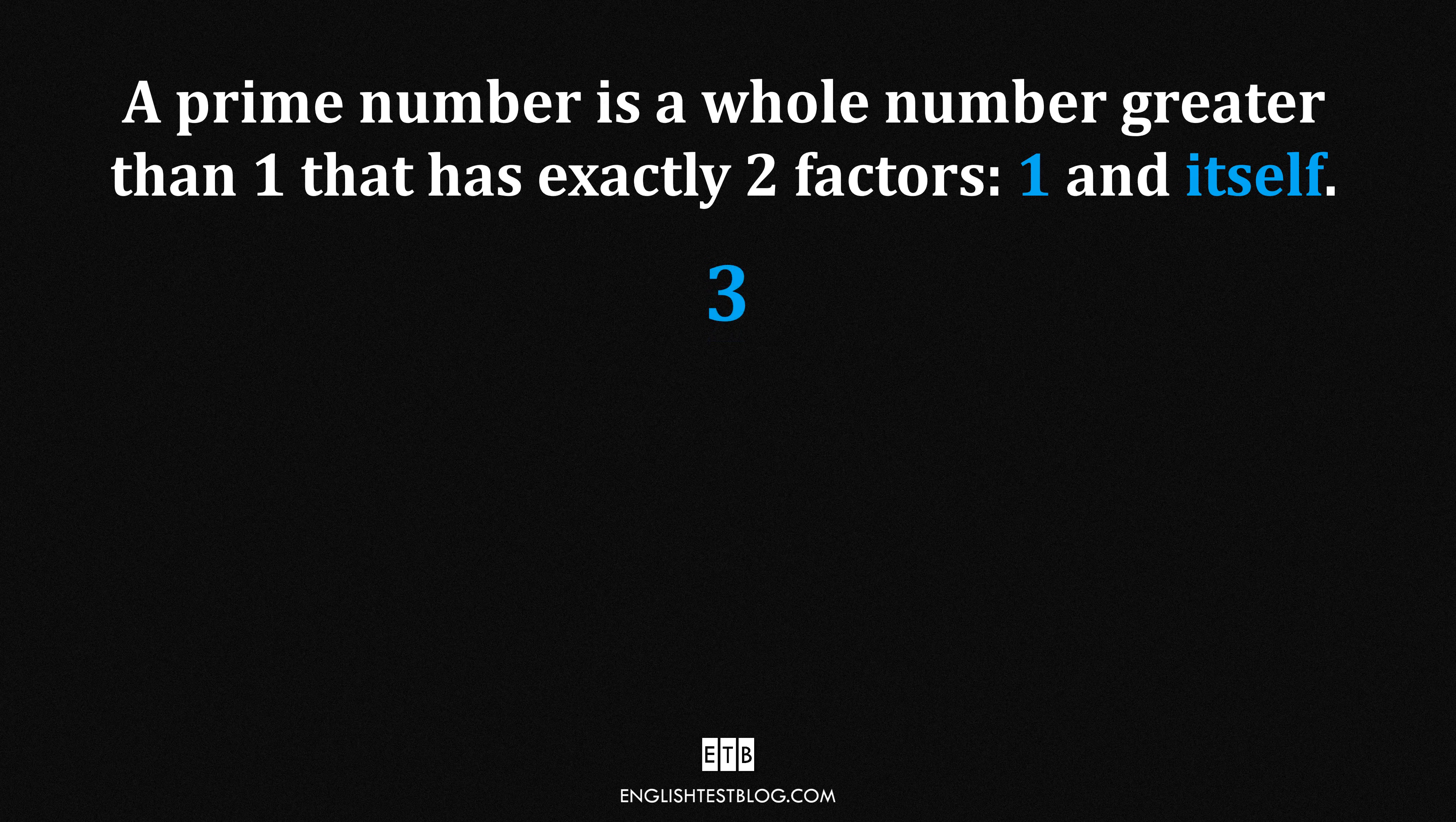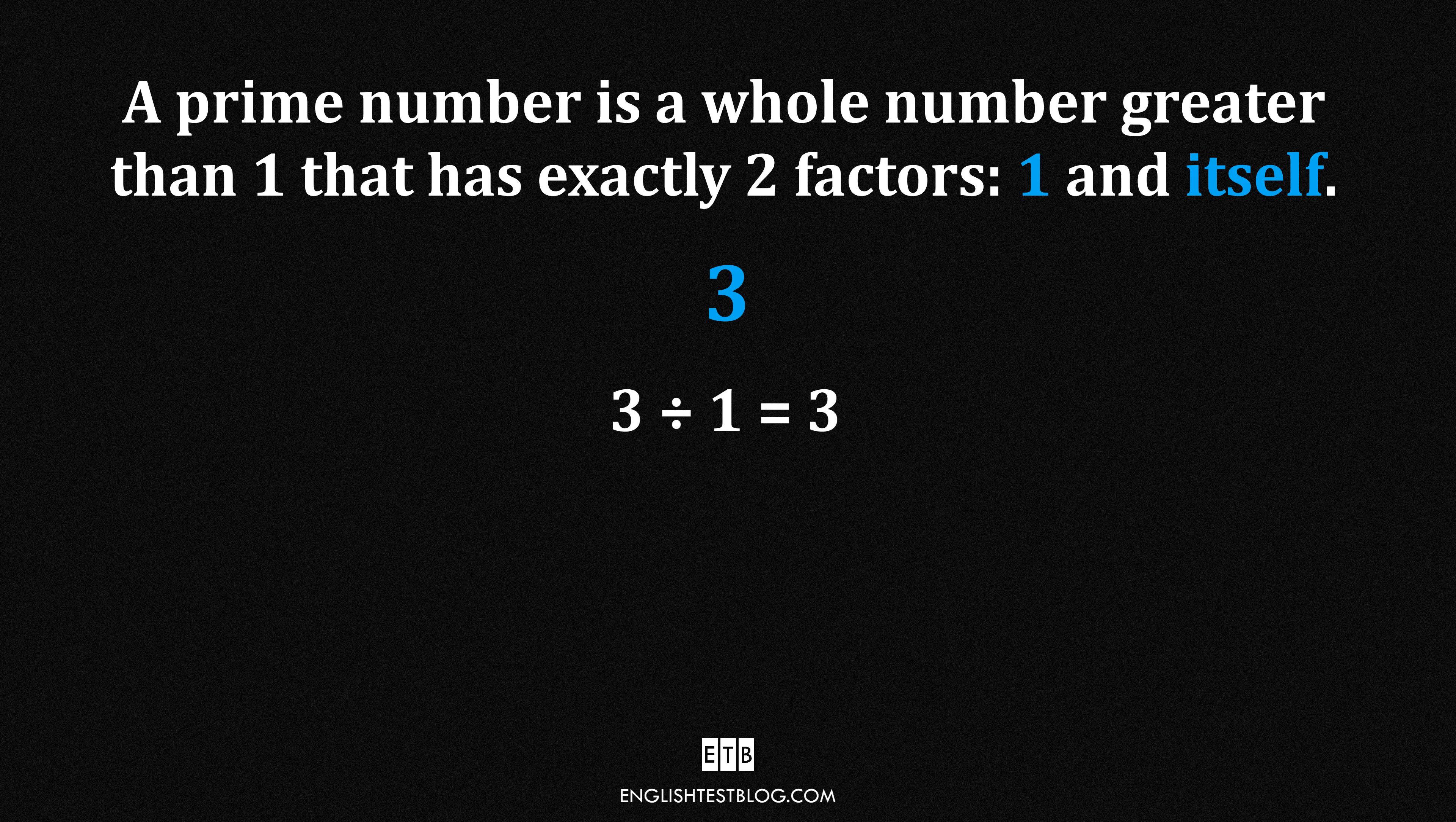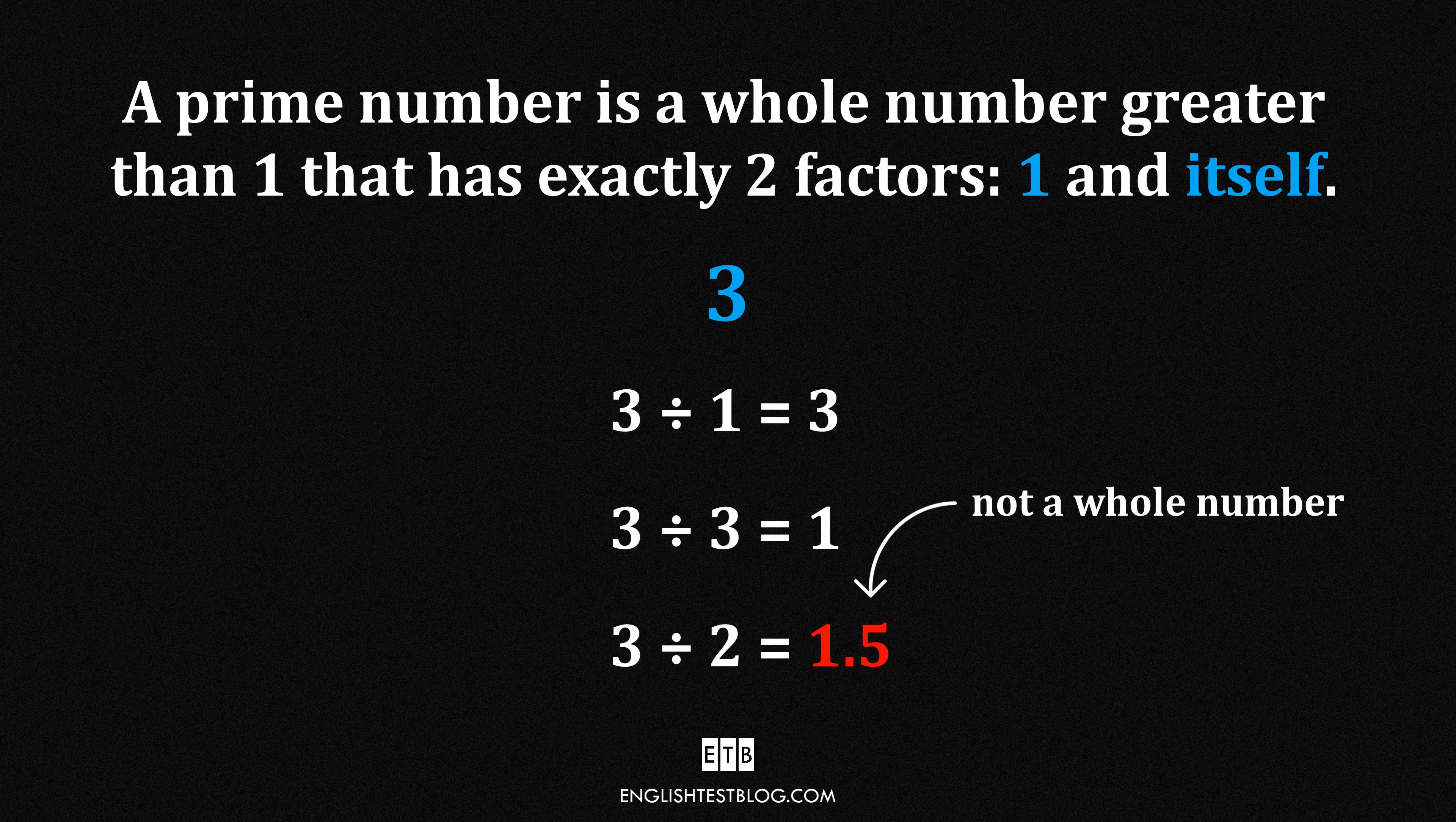Let's try another one, 3. Divide 3 by 1, you get 3. Divide 3 by 3, you get 1. What about 2? 3 divided by 2 is 1.5. Not a whole number. So, 3's factors are just 1 and 3. Two factors again. Prime!